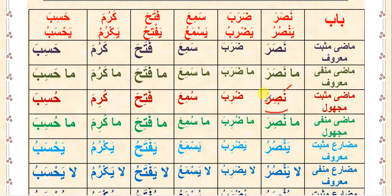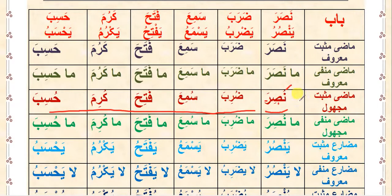What is very interesting here is that if you look closely, each and every bab has the same majhool pattern in mazi. For mazi musbat majhool, if you look at each bab you have the same i'rab. So if you understand this, you will never commit a mistake in making mazi majhool from any fi'l from any bab.